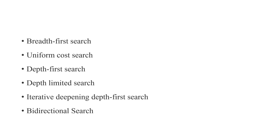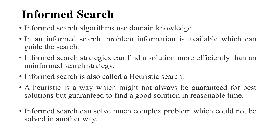Different algorithms fall under the category of uninformed or blind search: Breadth First Search, Uniform Cost Search, Depth First Search, Depth Limited Search, Iterative Deepening Depth First Search, and Bi-directional Search. In the next videos these algorithms will be explained in detail.